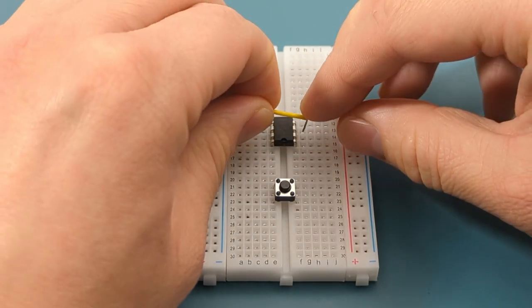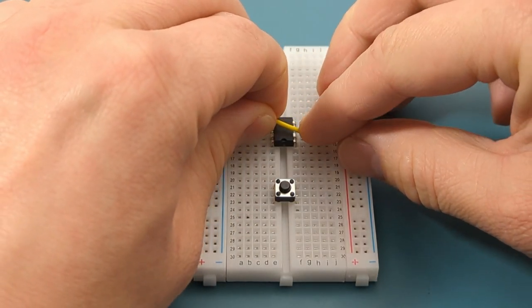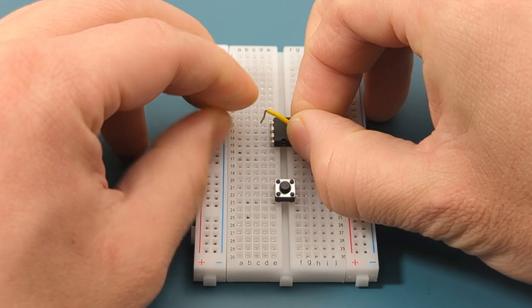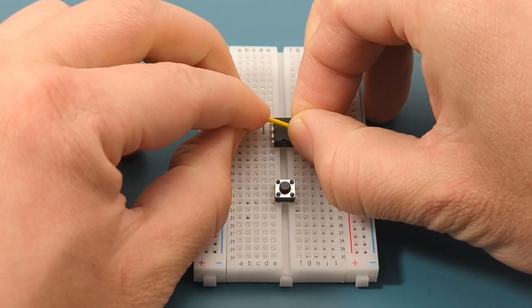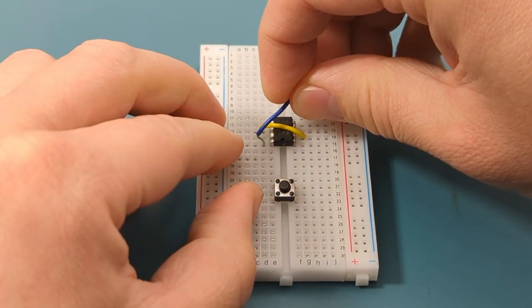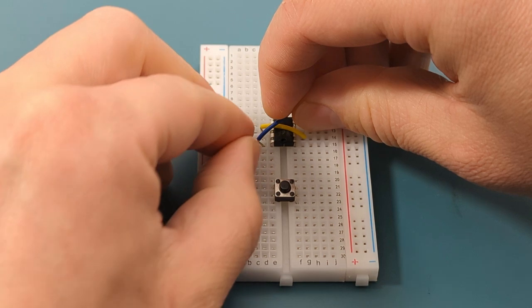Use a jumper wire to connect pin two or trigger to pin six or threshold. Use a jumper wire to connect pin eight or VCC to pin four or reset.